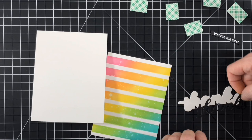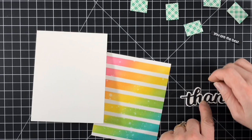I cut the base of the new Honey Script Thanks die in white, and I cut the word itself in black. I glued those two pieces together, and then set it aside.